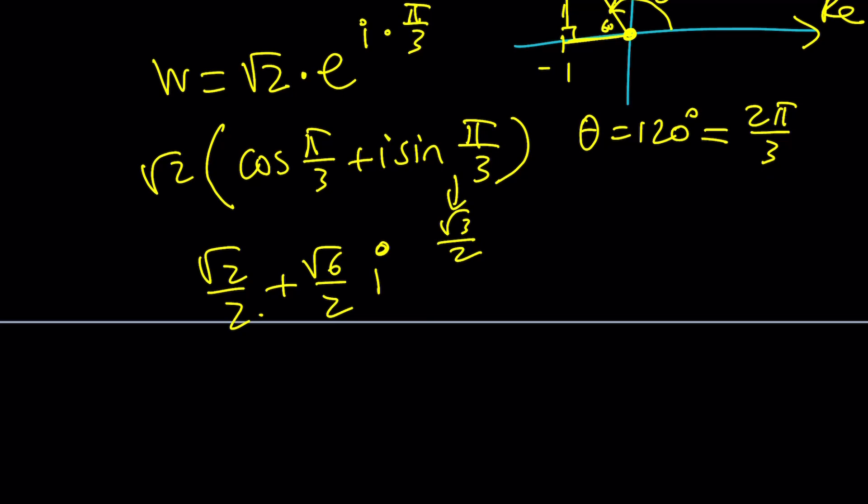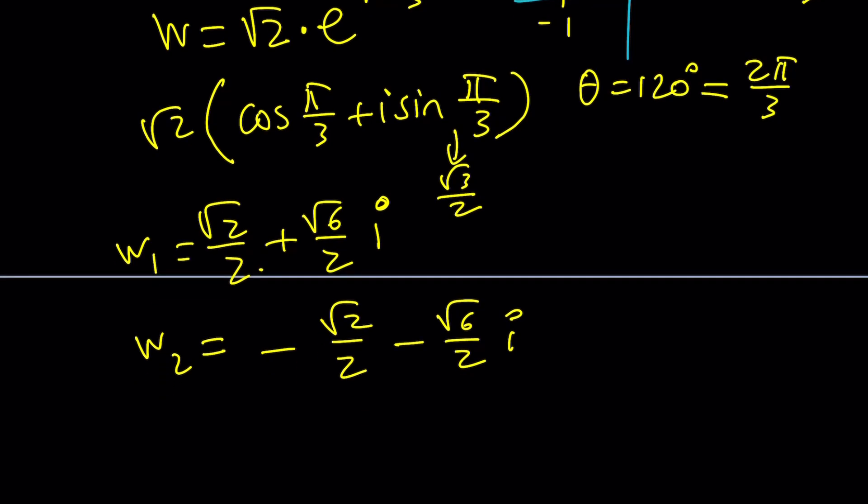But that's just one of the radicals. So w1, maybe. And then w2, the other square root, is just going to be the opposite. That's why I didn't really worry about the other argument. Okay, but these are just w values. And what is w?